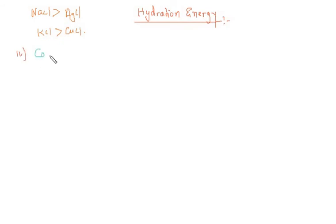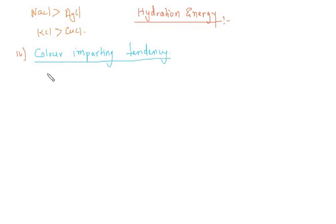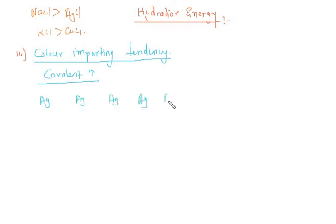Now we proceed to the fourth concept: color imparting tendency. As the covalent character increases, it has been observed that the color becomes more and more intense. For this, I'll take examples of all silver compounds: AgF, AgCl, AgBr, AgI, and Ag₂S — silver fluoride, silver chloride, silver bromide, silver iodide, and silver sulfide.